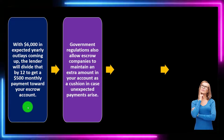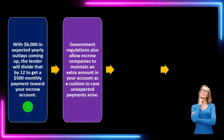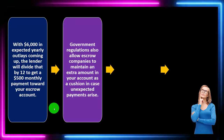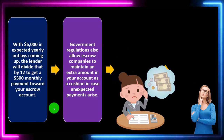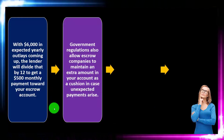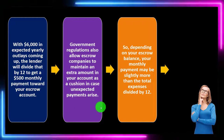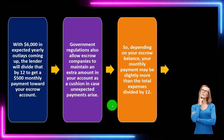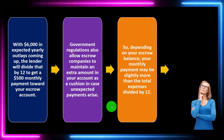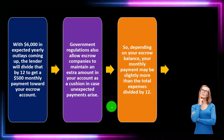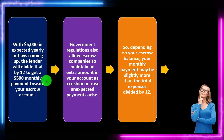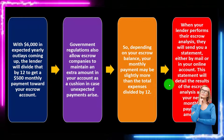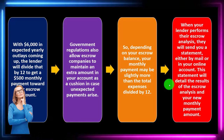Government regulations also allow escrow companies to maintain an extra cushion in your account in case unexpected payments arise. Having more money as a cushion makes the lender more comfortable in covering upcoming bills. Depending on your escrow balance, your monthly payments may be slightly more than total expenses divided by 12 — accounting for that cushion as a safeguard. When the lender performs the escrow analysis, they'll send you a statement by mail or online detailing the results and your new monthly payment amount.